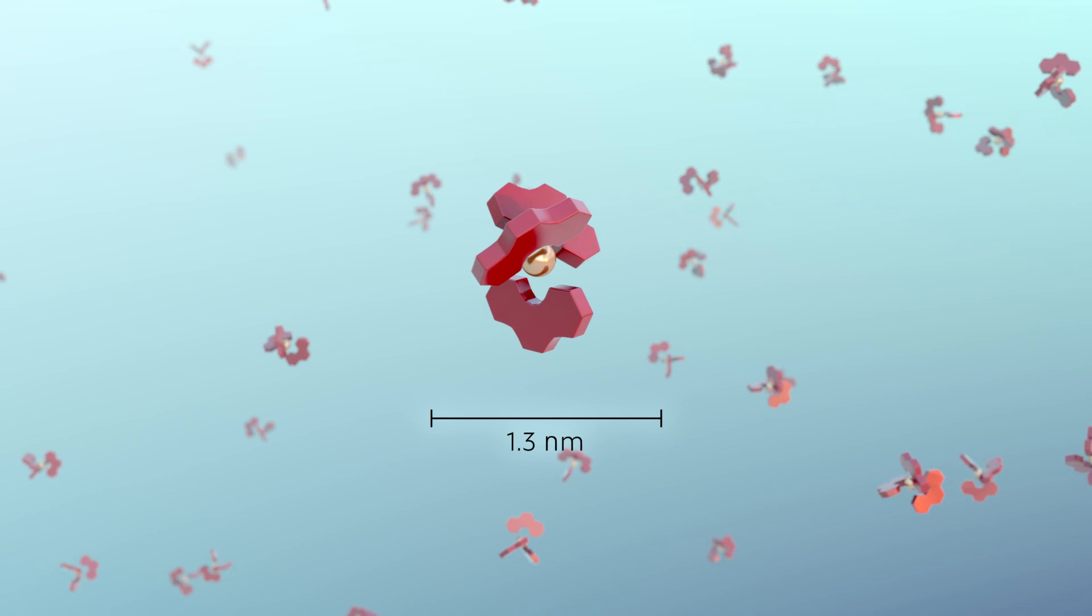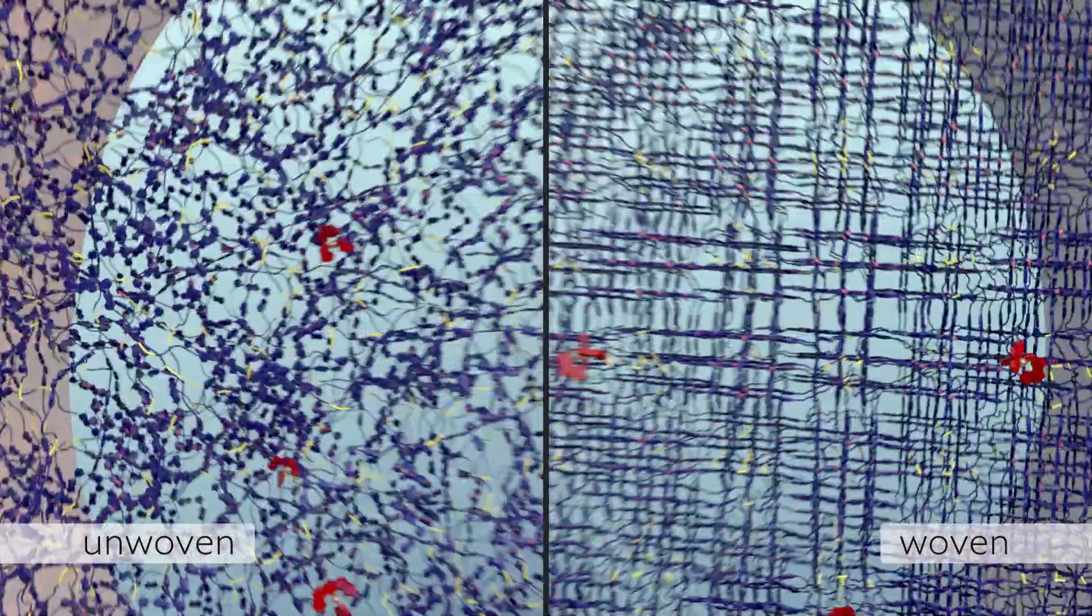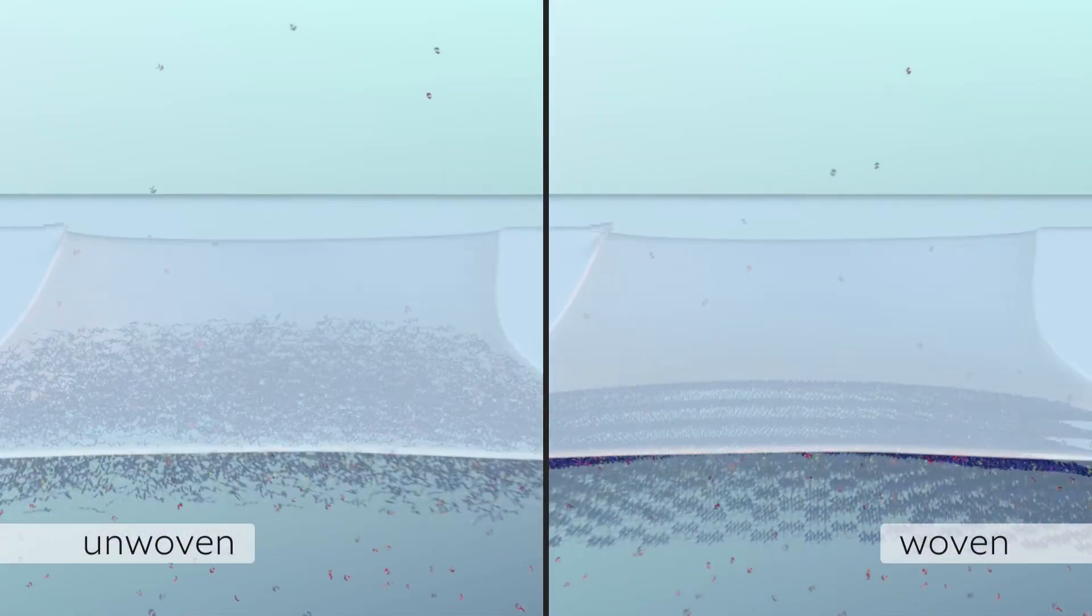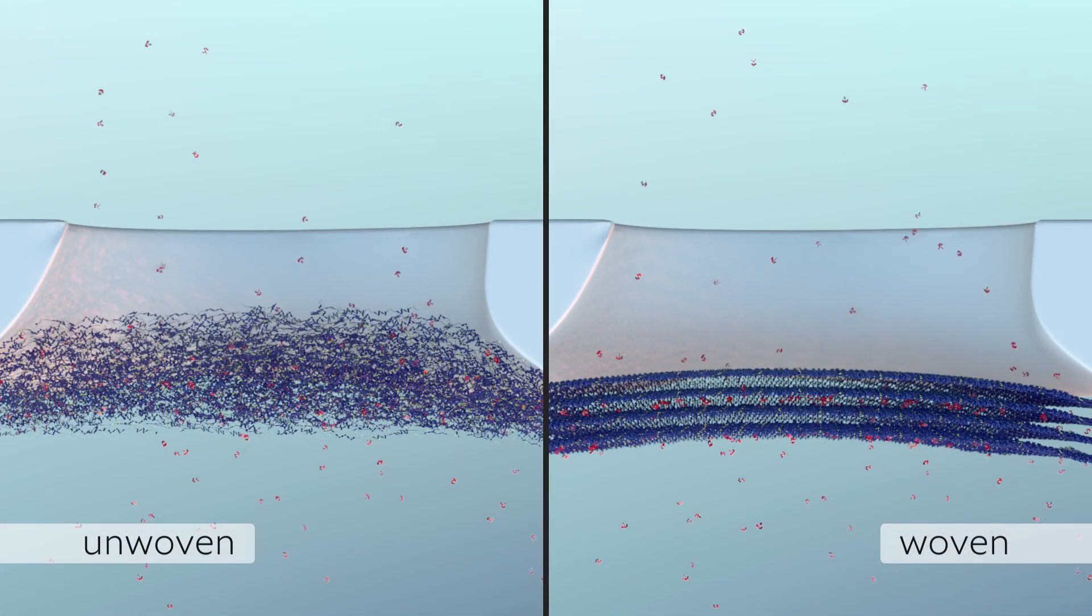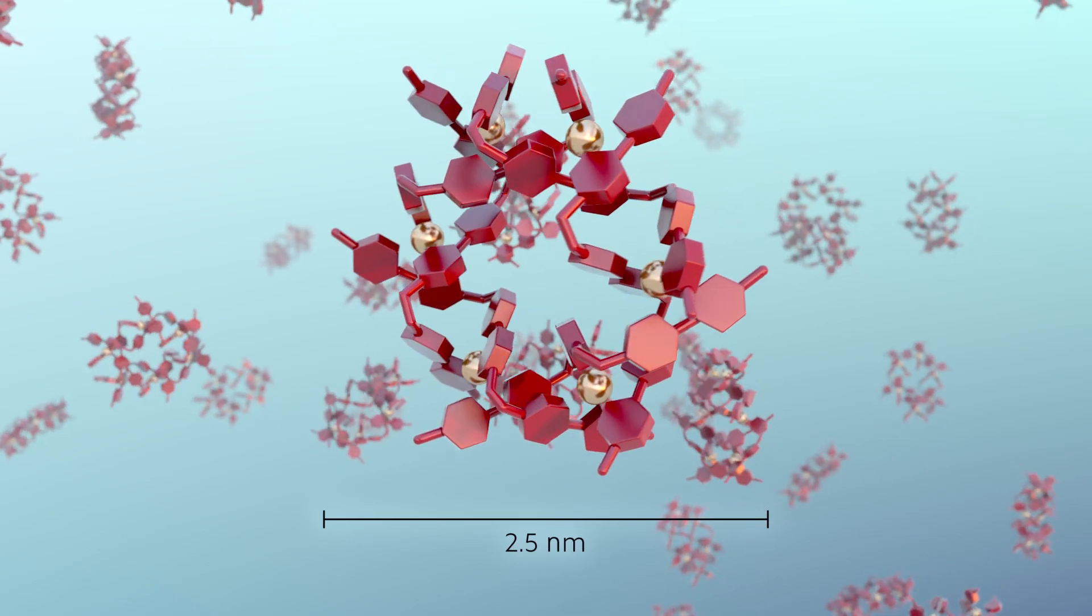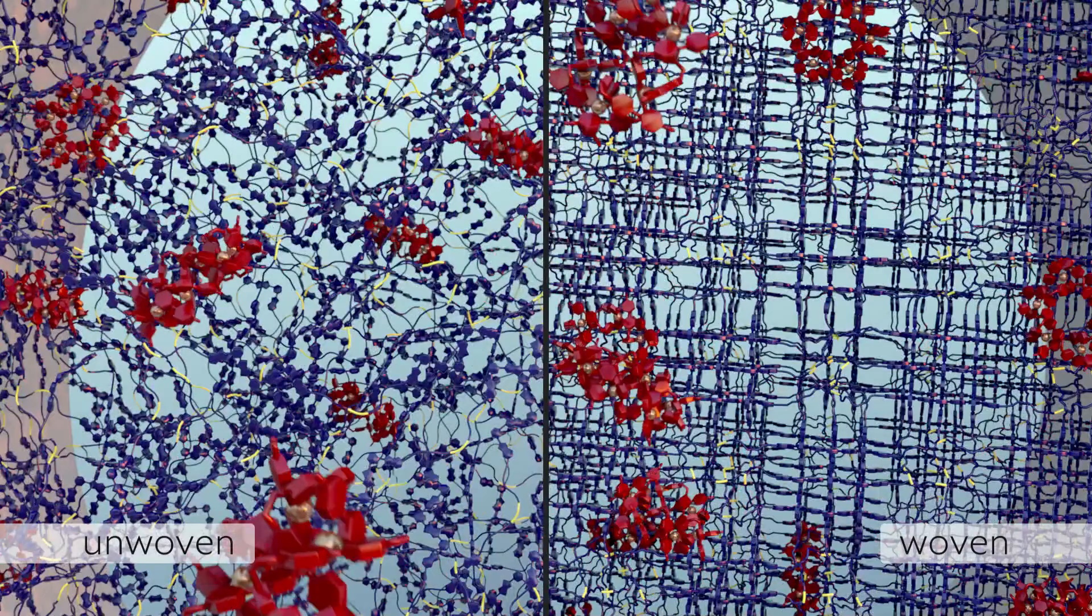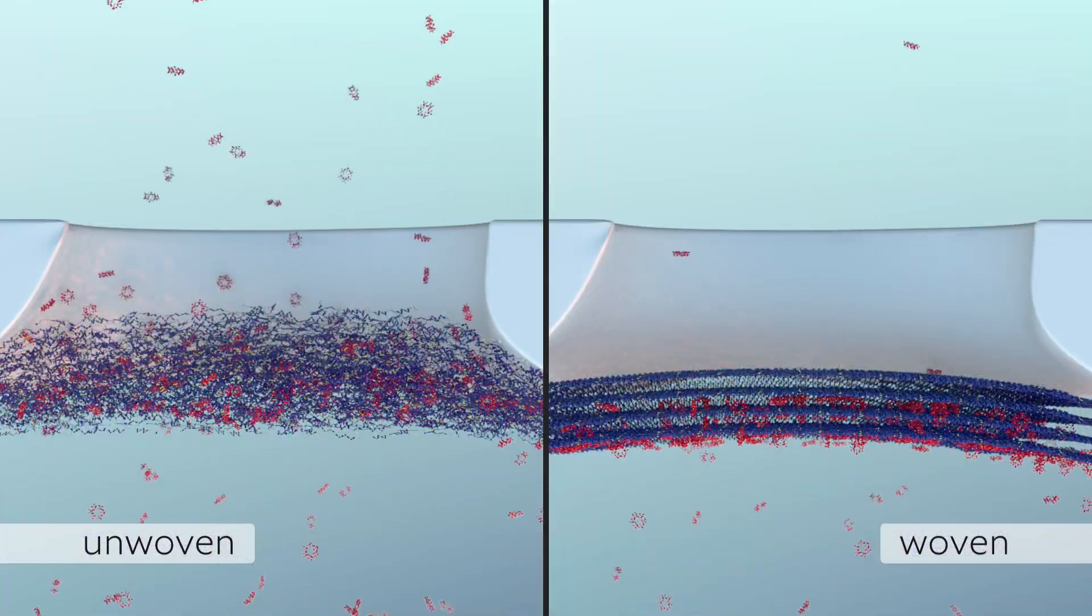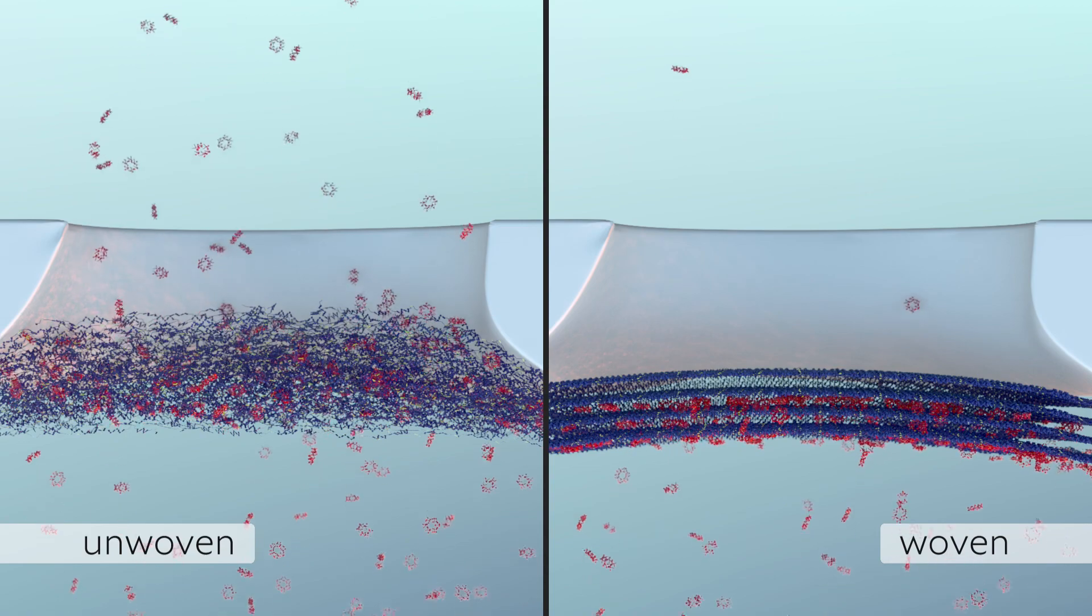First, we'll see if the smaller of the two candidates can pass through either the unwoven spaghetti, or the fabric, or both. Looks like it passes through both, fairly easily at about the same rate. Okay, we'll try the larger molecule next. And it looks like the fabric is a pretty effective net for this size. So there you go, using a molecular fabric as a filter for some pretty tiny substances.